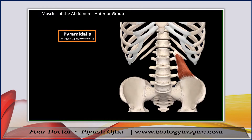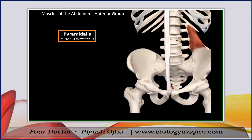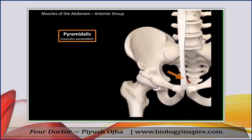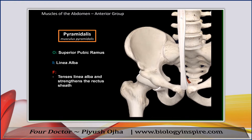The anterior group consists of two muscles. The first is a tiny muscle located down here — the pyramidalis. It originates from the superior pubic ramus and inserts at the linea alba, which are fibers in the midline. Its function is to tense the linea alba and strengthen the rectus sheath, which are tendons of the lateral group of muscles, helping to tense the tendons of the lateral abdominal muscles.